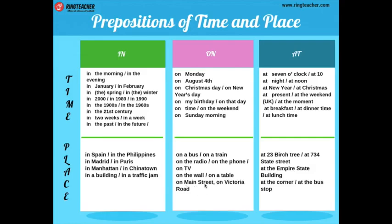Con dos ejemplos más: on Main Street, on Victoria's Road. Y con at, esta preposición: at 23 Pierce Street — para describir calles específicas, una dirección. O un lugar específico: at the Empire State Building, at the corner.